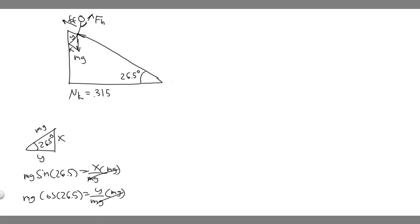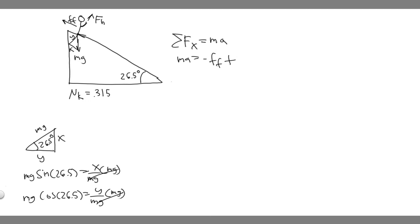Now we take the sum of the forces in the x-direction, which equals ma. We're moving at some acceleration, so the net force is ma. Along the incline, force of friction is negative because it opposes motion, and the x-component of the weight force is positive going down the incline. So: ma = -F_friction + mg·sin(26.5°). Dividing both sides by m, we need to find the force of friction. The formula for friction on a moving object is μk times the normal force. We know μk, so we just need the normal force.